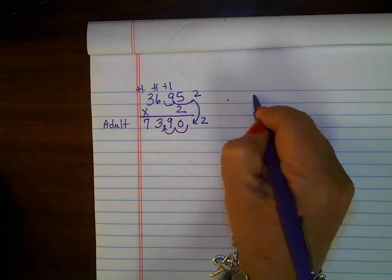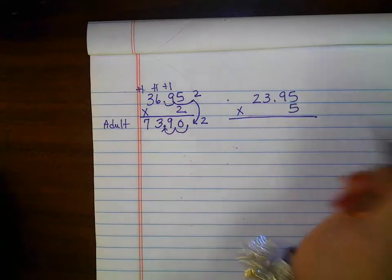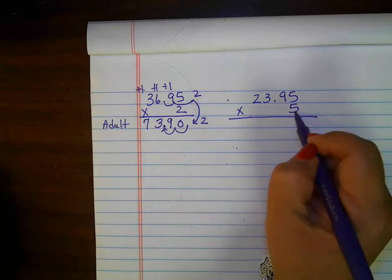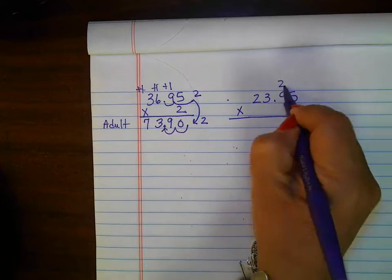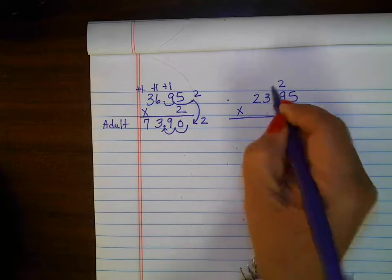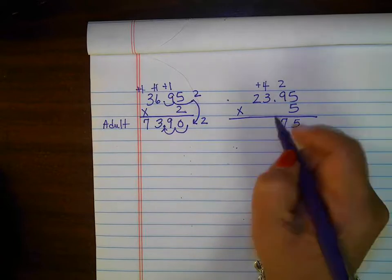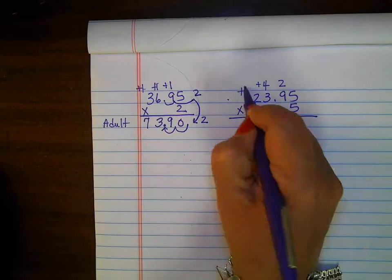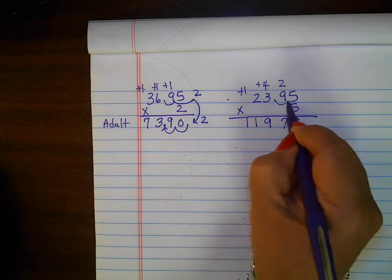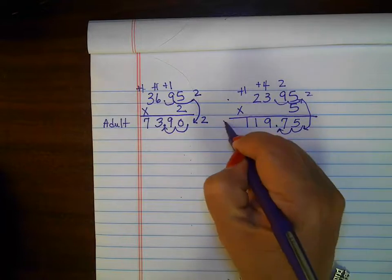For the youth, $23.95 times 5 of them. 5 times 5 is 25. 5 times 9 is 45 plus 2 is 47. Regroup. 5 times 3 is 15, 15 plus 4 is 19. Regroup my 1. 5 times 2 is 10 plus 1 is 11. I moved this out twice. I'm going to bring it back in 1, 2. So this is youth.